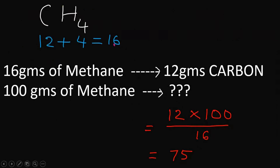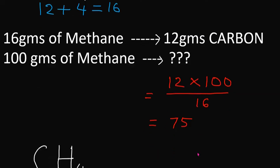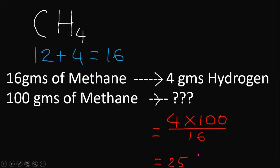16 grams of methane has 12 grams of carbon. So 100 grams of methane has: 12 × 100 ÷ 16 = 75. The weight percentage of carbon is 75.